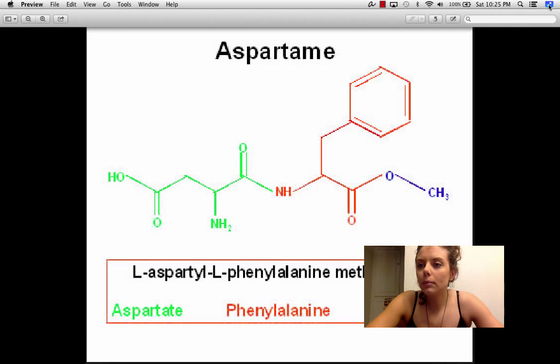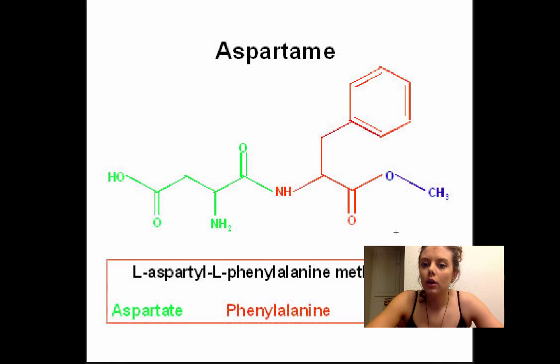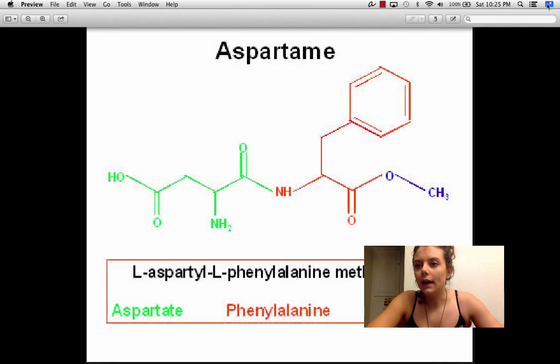So methanol is broken off in your body first via acid hydrolysis. The hydrogen in acid hydrolysis, a positively charged hydrogen, is taken up by this oxygen. And this group right here will leave with that hydrogen, and it turns into methanol.